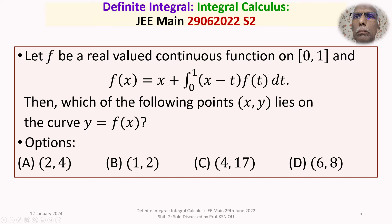We are given f(x) = x + ∫₀¹ (x − t)·f(t) dt, where f is a real-valued continuous function defined on the closed interval [0, 1]. We need to determine which of the four given points lies on the curve y = f(x), where f(x) is defined by this integral equation.